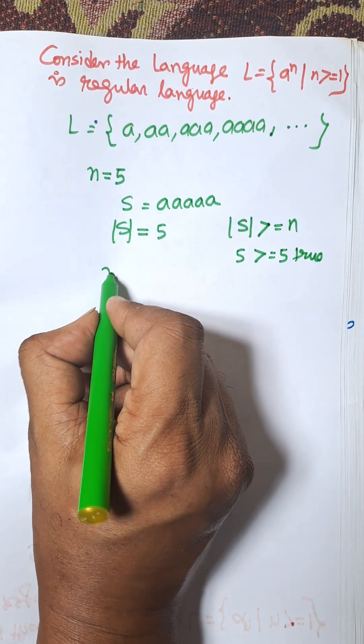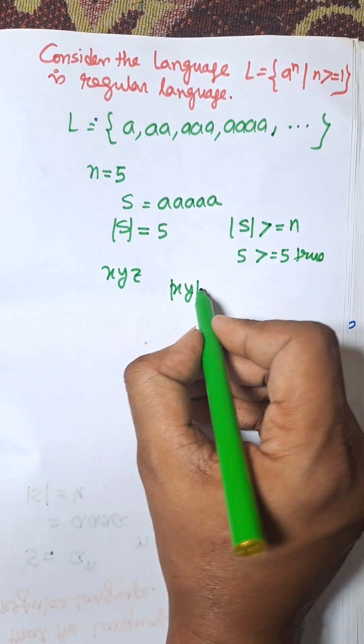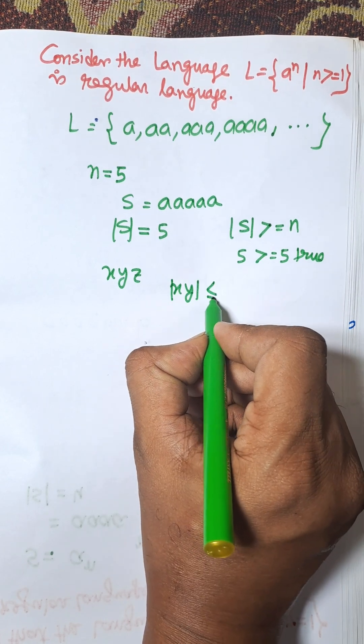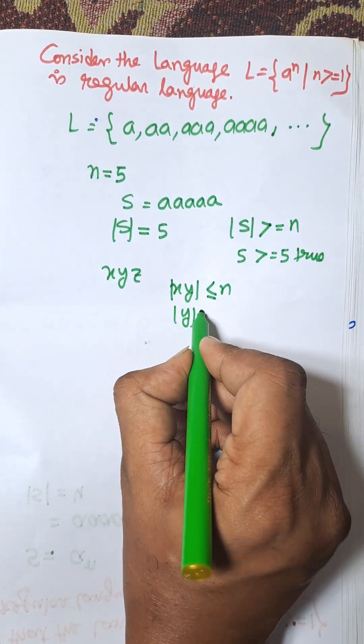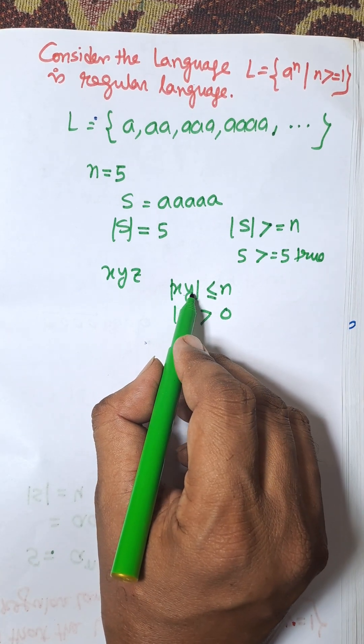Now, we need to find x, y, and z such that length of xy is less than or equal to n, and length of y is greater than 0.